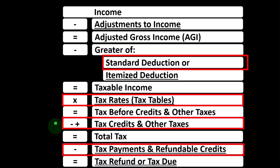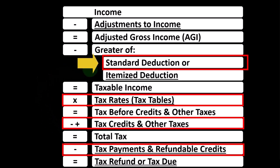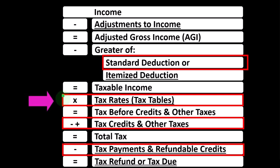For example, going from single to head of household could be largely dependent on a dependent, and that could affect the standard deduction as well as the tax rates.